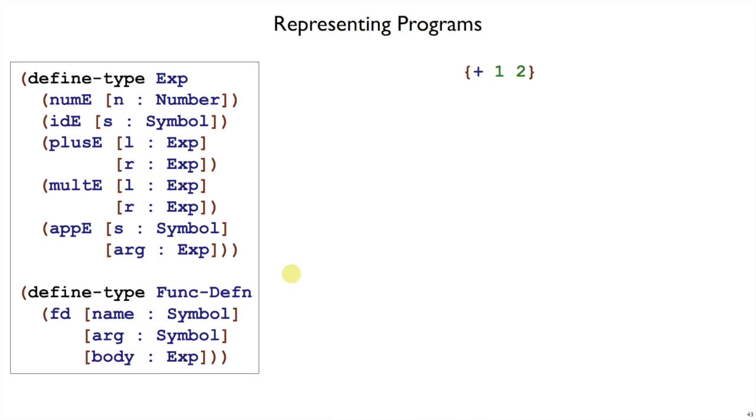So putting those definitions on the side here, let's look at how we represent different programs. A program can still be just an expression, like plus one two, and we'd still represent that the same way, with plus e and two numes.